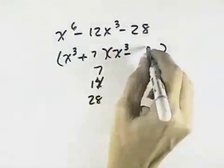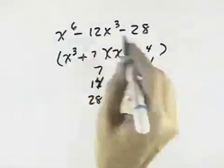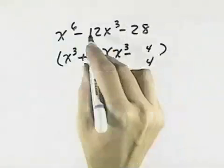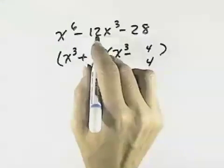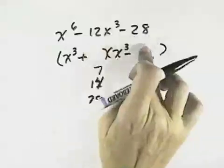So trying each of these, we might try the 7 with the 4. A positive 7 and a negative 4x cubed gives us positive 3x cubed. That will not give us negative 12x cubed. So we'll try the next one.